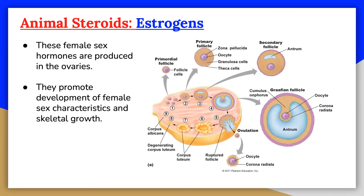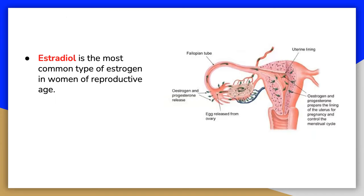Estradiol is a steroid hormone made from cholesterol and is the strongest of the three naturally produced estrogens. It is the main estrogen found in women and mainly acts to mature and maintain the female reproductive system. A natural increase in blood estradiol concentrations during the menstrual cycle causes an egg to mature and be released. Estradiol also thickens the lining of the uterus so that the egg can implant if fertilized, promotes the development of breast tissue, and increases both bone and cartilage density. Estradiol levels vary throughout the menstrual cycle, being highest at ovulation and lowest at menstruation, and the placenta also produces a lot of estradiol during pregnancy.